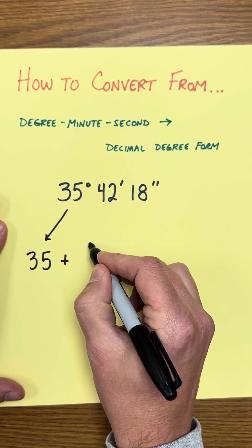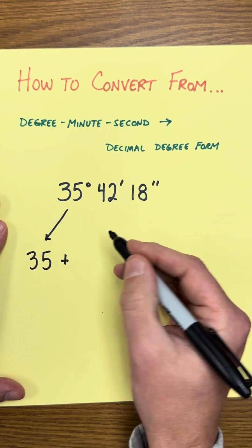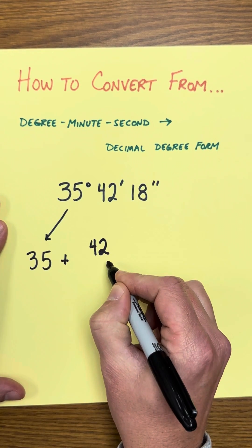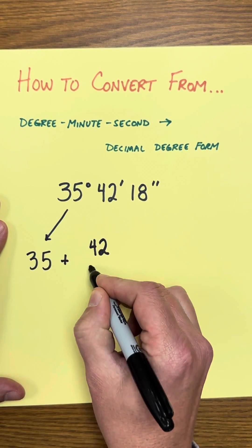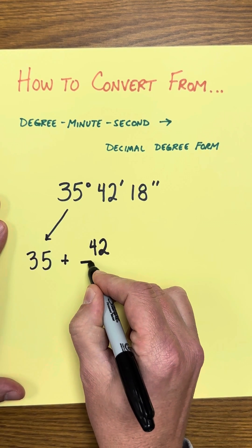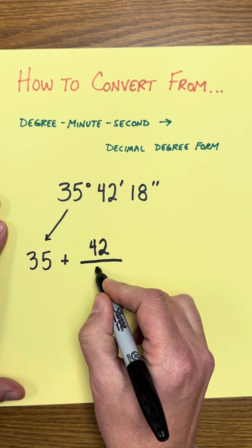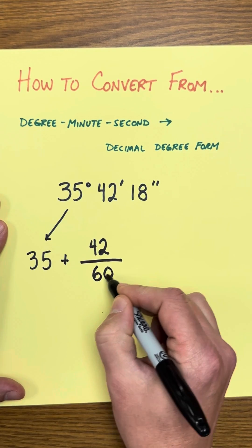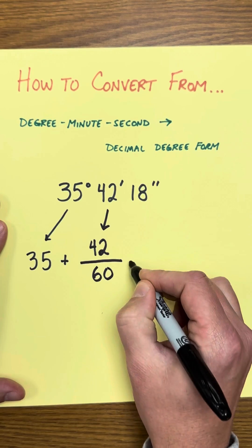Now, 42 minutes. The key there, I think, is in the vocabulary. 42 minutes. Think a clock face. A clock face is circular. How many minutes are in one hour? And there are 60 minutes. So we want 42 over 60 plus.